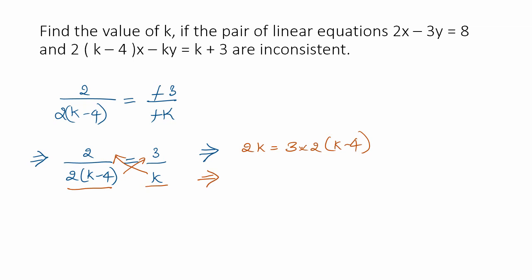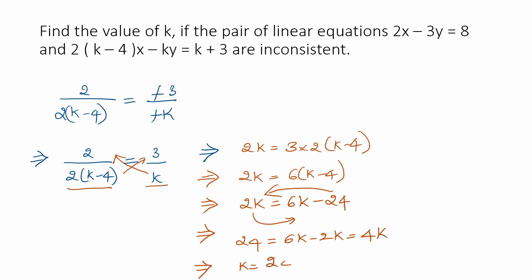That is equal to 2k equals 6k minus 24. That is same as 24 equals 6k minus 2k which is 4k which implies k equals 24 by 4 which means it is 6.